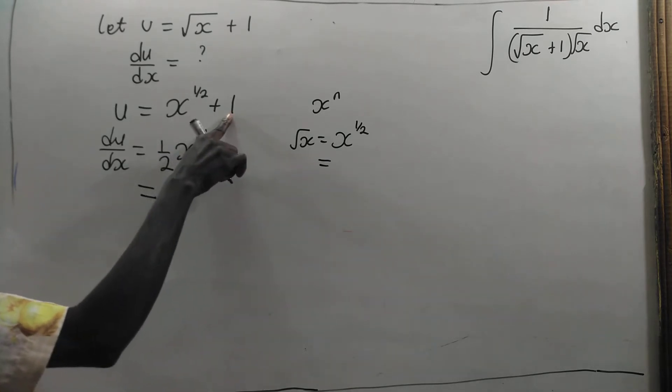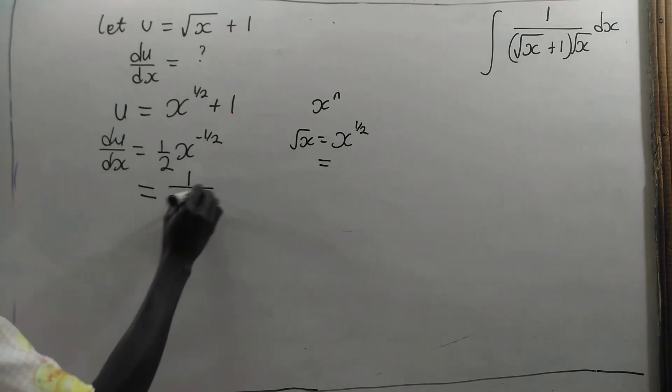If you differentiate this constant, you get 0 which is the same as 1 divided by the square root of x.